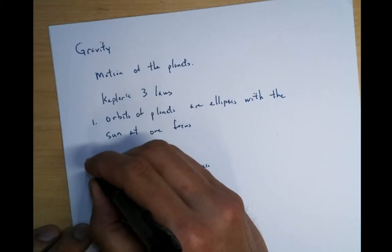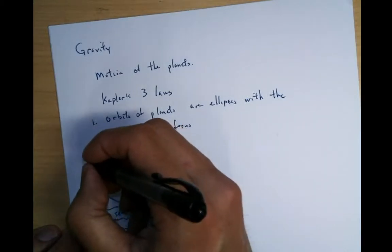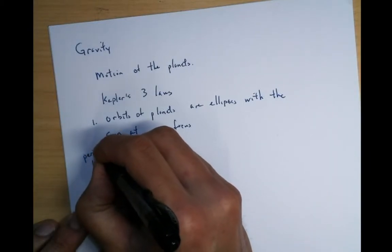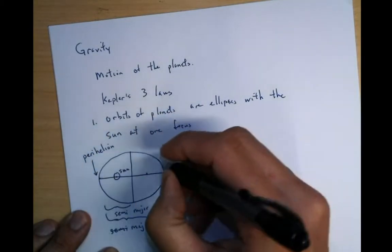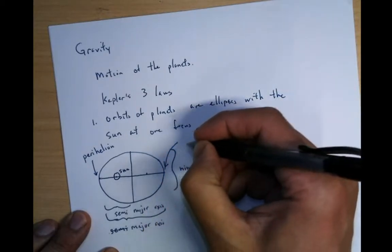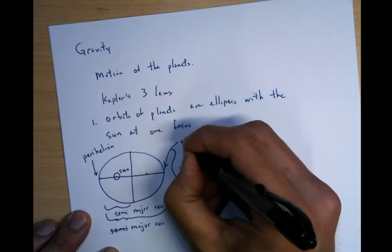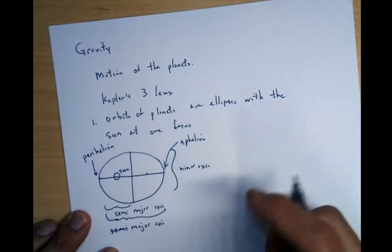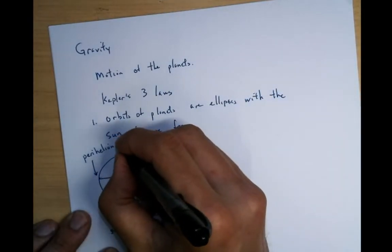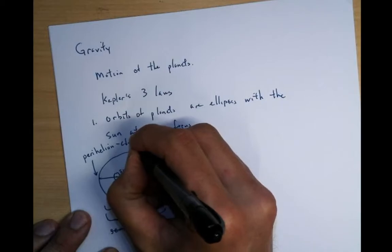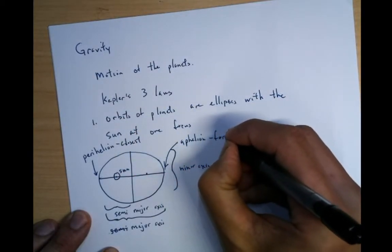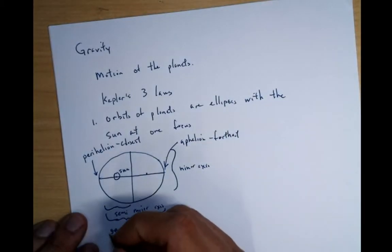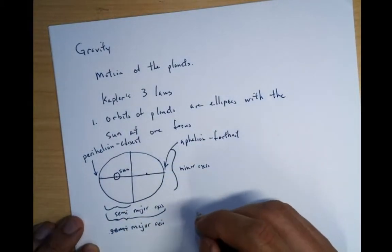And there are two points. There's a point of closest approach. This is called perihelion. And the point of furthest approach is aphelion. This is closest. This is furthest.